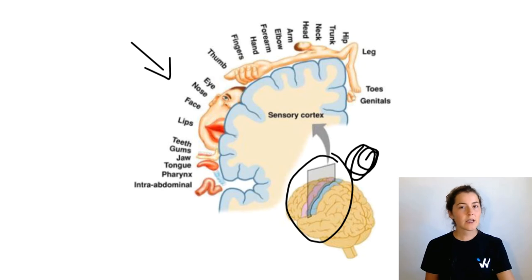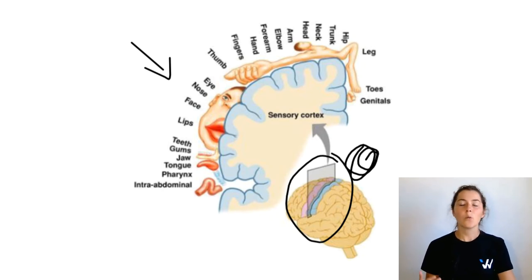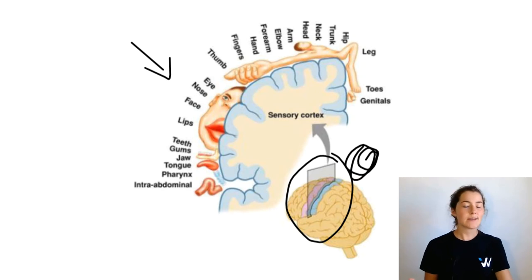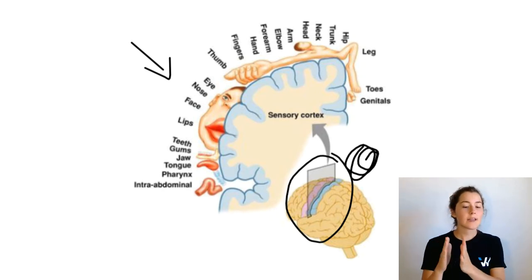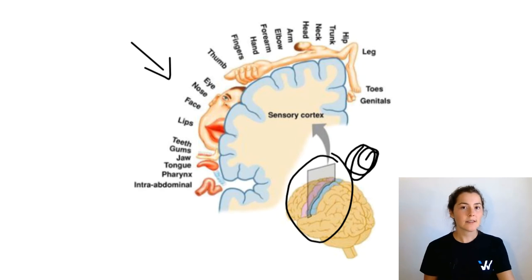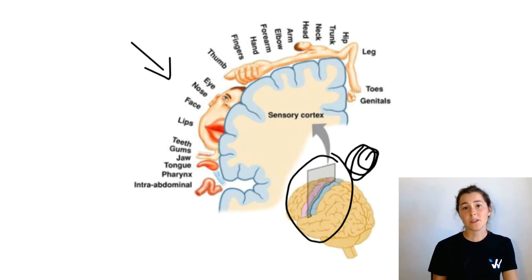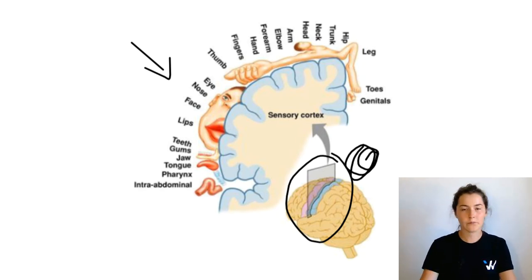This area is very highly organized. We call this a somatotopy. Somatotopy is basically a map of the body — it's the organization of the sensory cortex so that the information doesn't get all scrambled up.